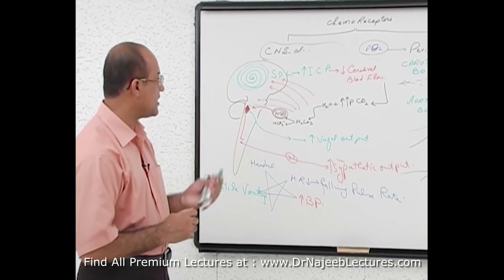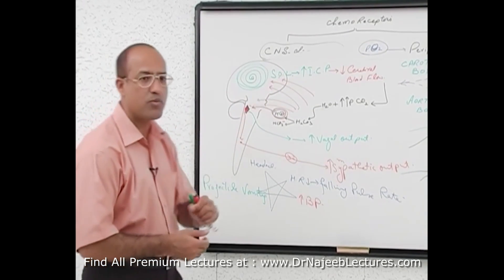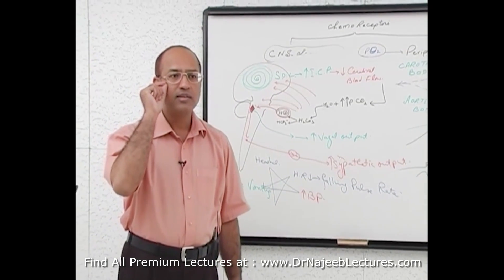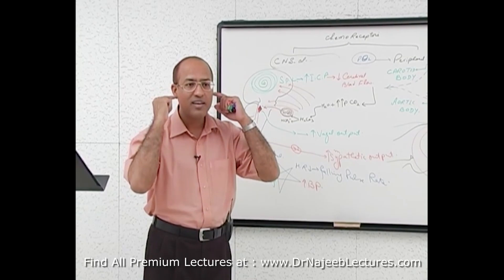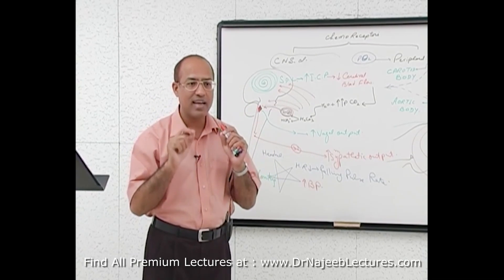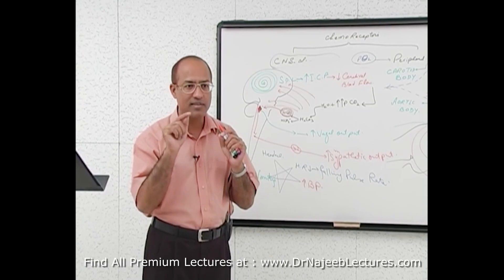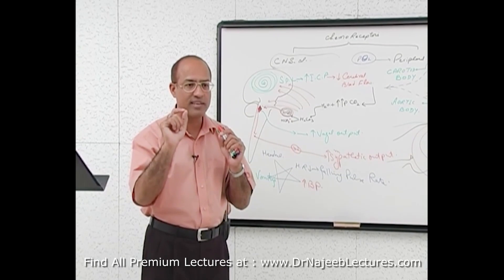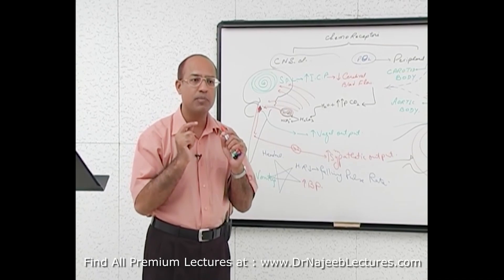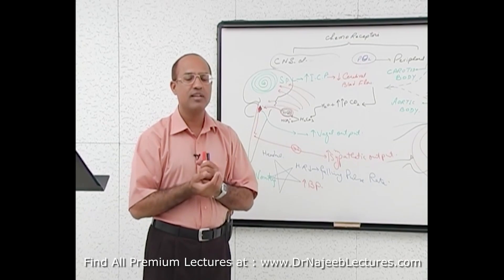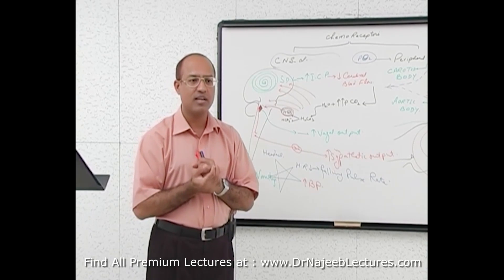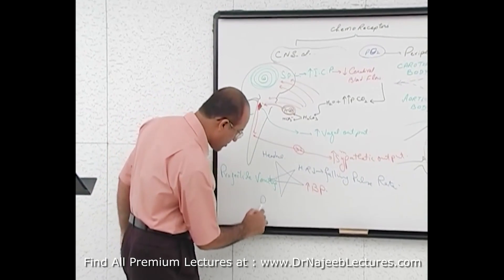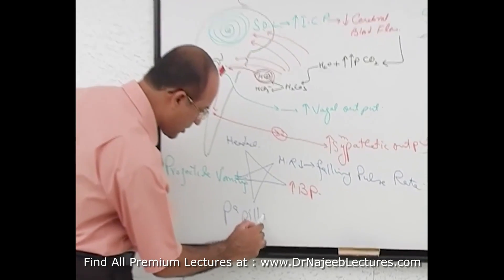Another thing: when intracranial pressure becomes very high, it compresses the retinal veins. So blood cannot be drained well from the retina. The retinal artery keeps on taking blood to the retina, but the retinal vein cannot bring the blood out of the retina. So what really happens is that the optic disc becomes swollen and edematous — we call it papilledema.